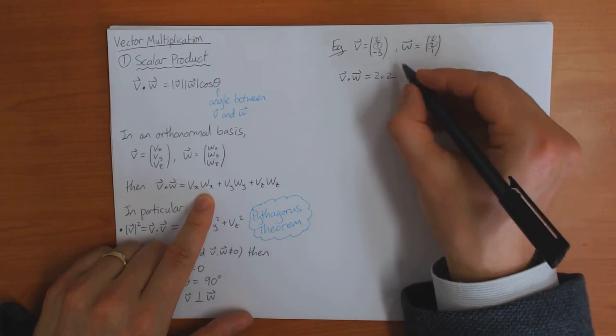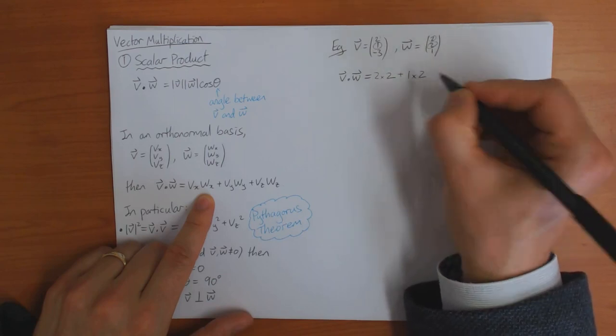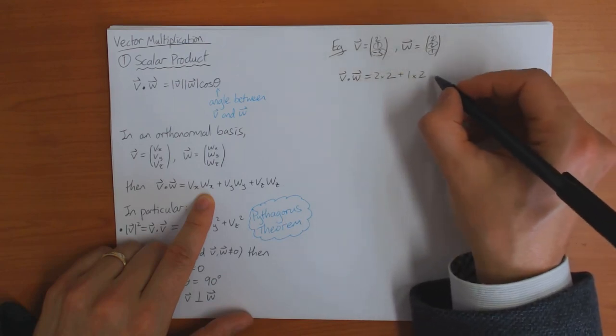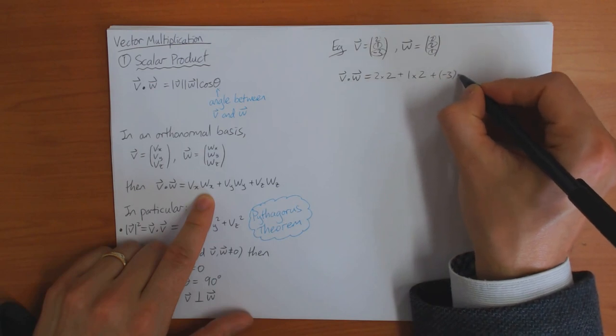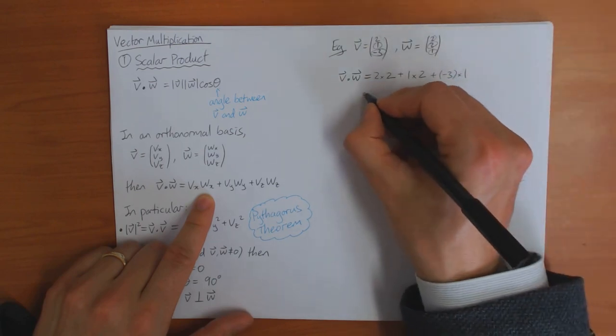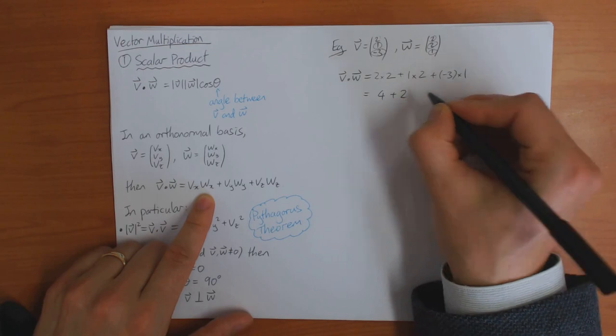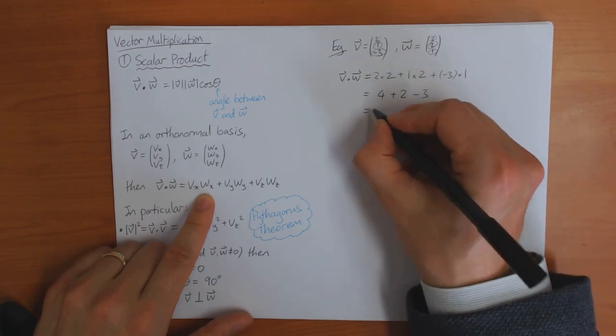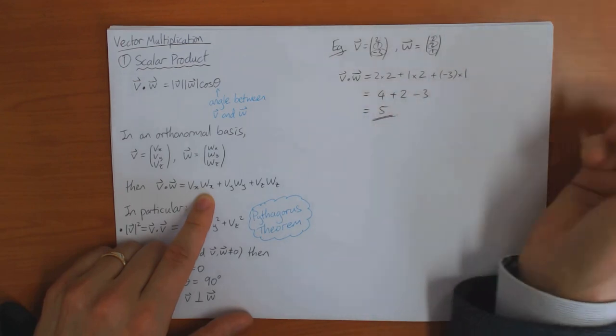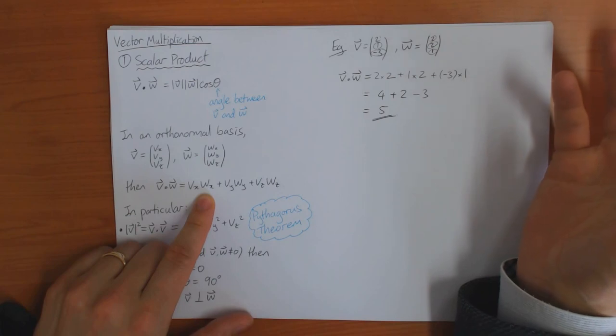And then the y components, that's one times two. And then the z components, that's minus three times one, which is four plus two minus three, which is five. The scalar product is five.